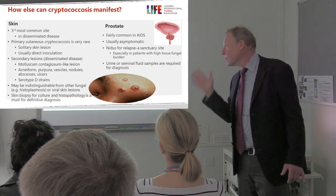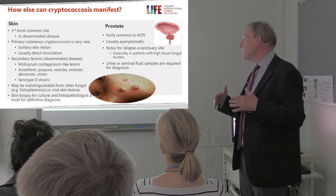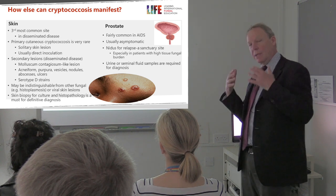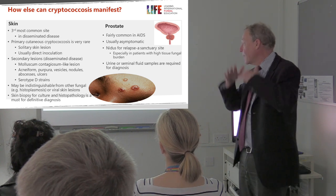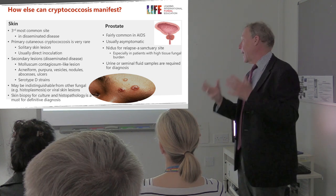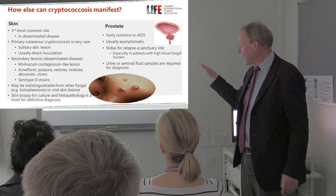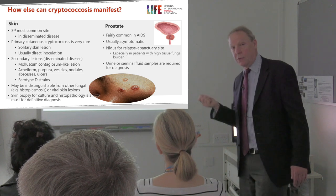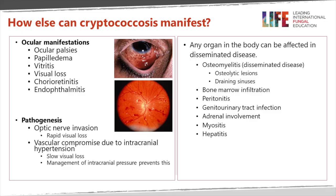Prostate involvement is fairly common in AIDS and is often asymptomatic. It provides a nidus for subsequent relapse — one of the reasons why, after getting a patient better from cryptococcal meningitis, we continue with longer-term therapy to prevent relapse. If you want to make that diagnosis, you need to take a urine sample or seminal fluid to actually grow cryptococcus from it.